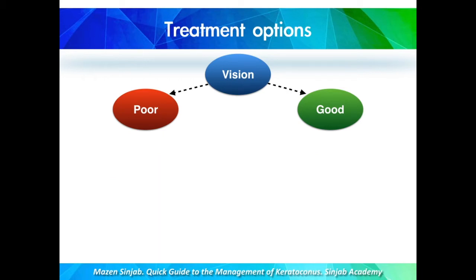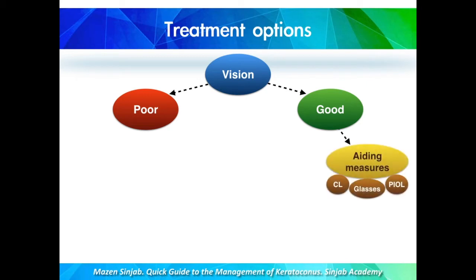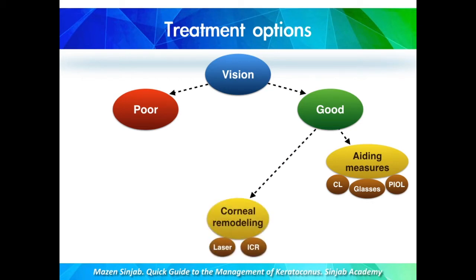Contrary to that, vision is poor whenever corrected and uncorrected distance visual acuity differ by two lines or less, and there are significant high-order aberration symptoms. Whenever vision is good, we can go to aiding measures — advising the patient to use contact lenses, glasses, or phakic IOL implantation. When the cornea is irregular, we can improve it by corneal remodeling measures such as laser or intracorneal rings including myring, followed by aiding measures.